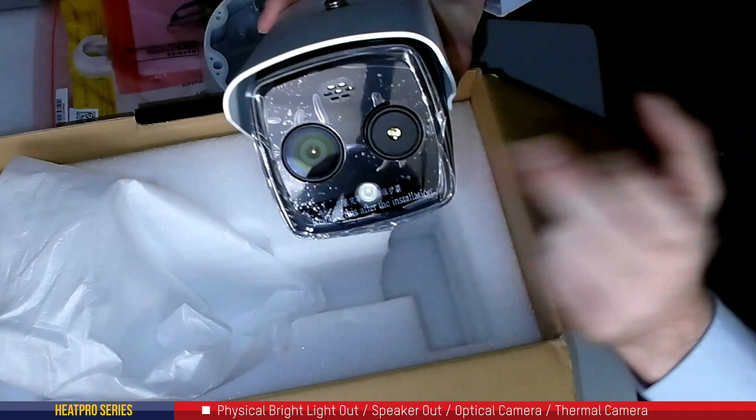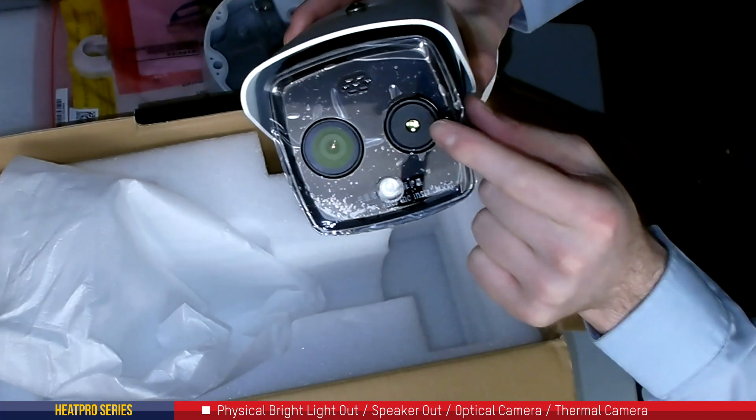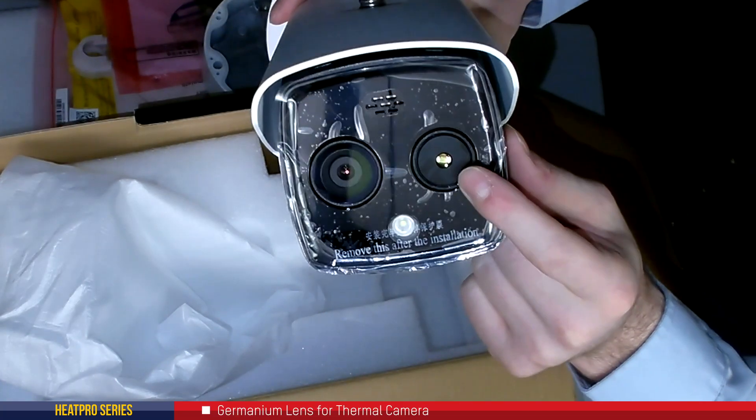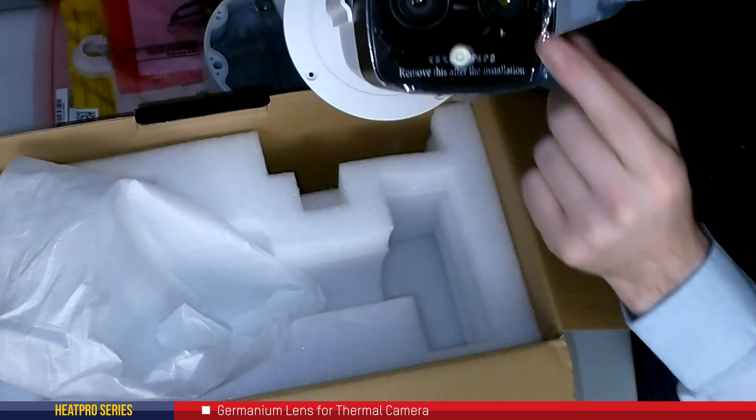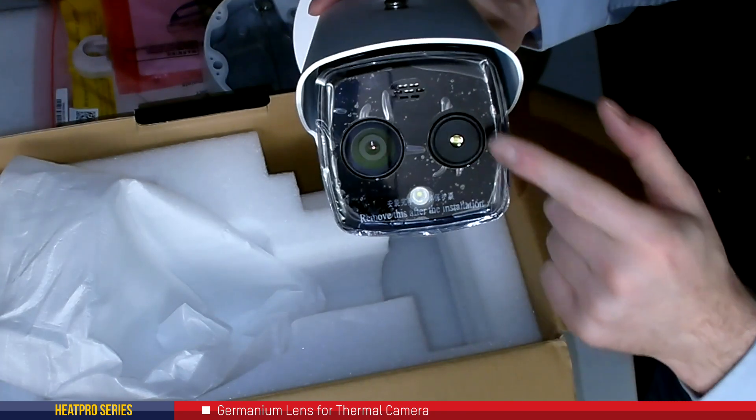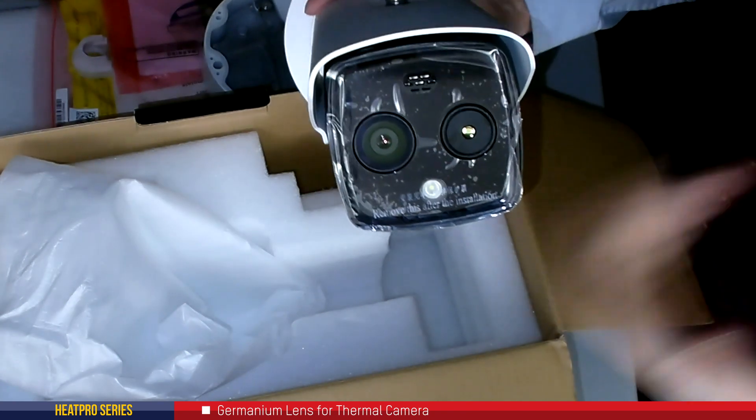Now the thermal camera has a different lens and sensor compared to the optical. So this uses a germanium lens. So it's almost like a piece of metal and that is what's going to reflect the visible light spectrum.